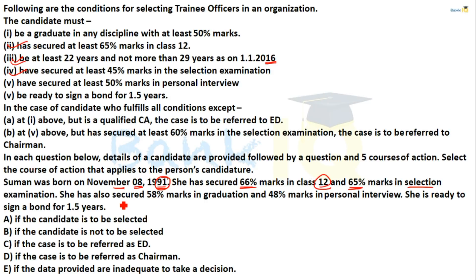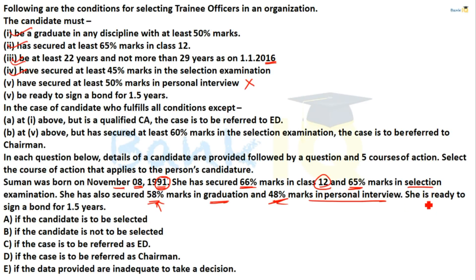She has secured 58% marks in graduation — condition satisfied. However, she scored only 48% marks in the personal interview, which is below the required 50% — this condition is not satisfied. She is ready to sign a bond of 1.5 years — satisfied.